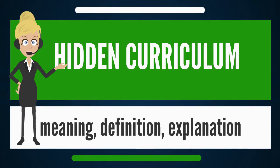According to Elizabeth Falins, the functions of hidden curriculum include the inculcation of values, political socialization, training in obedience and docility, and the perpetuation of traditional class structure — functions that may be characterized generally as social control. Hidden curriculum can also be associated with the reinforcement of social inequality, as evidenced by the development of different relationships to capital based on the types of work and work-related activities assigned to students varying by social class.